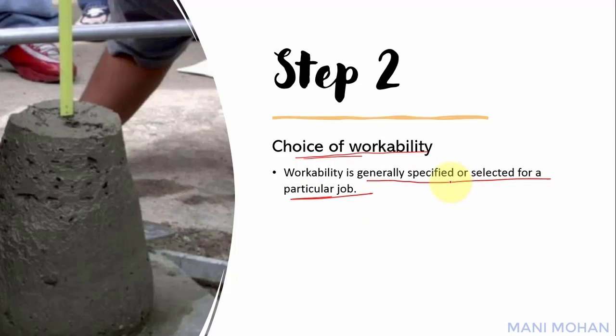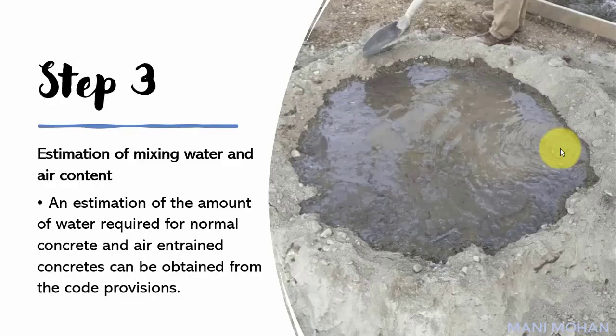If workability is not specified, an appropriate value in terms of slump, compacting factor, or Vee-Bee time is selected as recommended by the code. As a general rule, the lowest slump that will permit adequate placement, compaction, and finishing should be selected. Step 3: Estimation of mixing water and air content — the amount of water required for normal and air-entrained concrete is obtained from standard tables. In cold regions, air-entraining admixtures are routinely used to make concrete frost resistant.